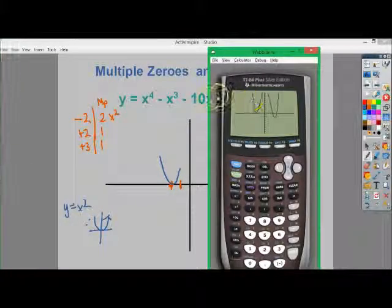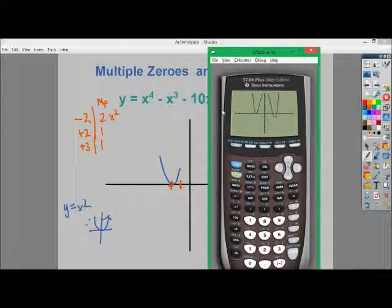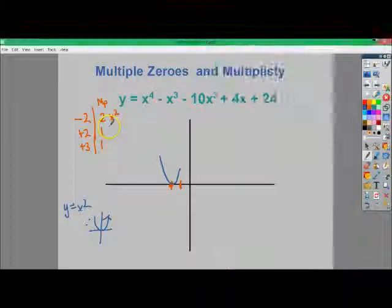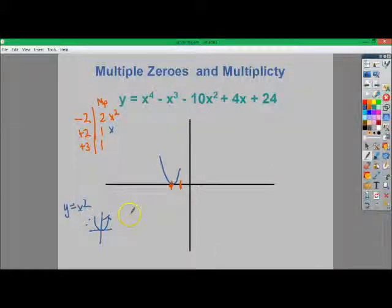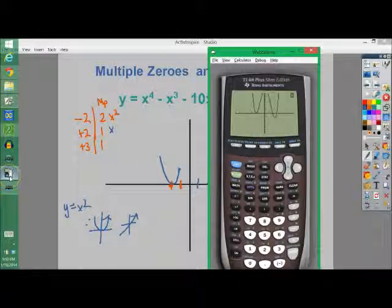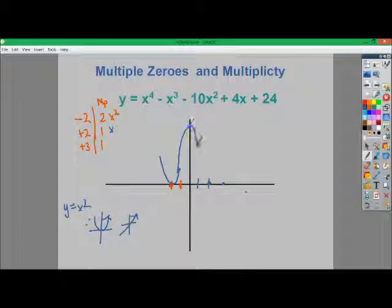But you'll notice when I only have a multiplicity of 1, it goes right through. So it's much more linear in fashion. If I have y equals x, see how it just jams through the x-axis? Well, that means that positive 2 and positive 3, as you can see, kind of cuts through and then cuts through again.